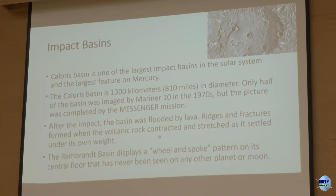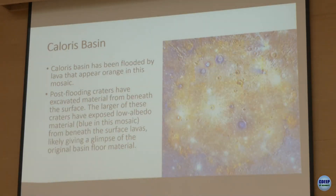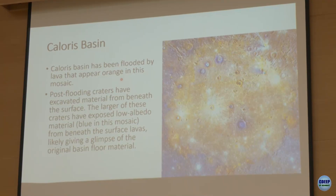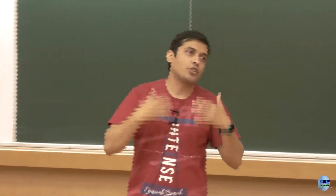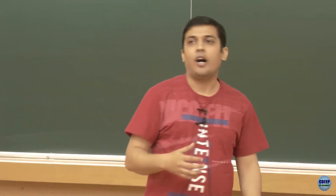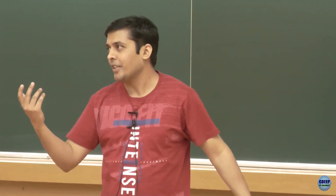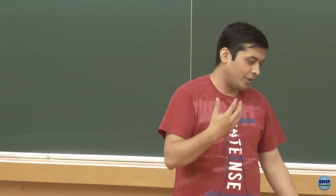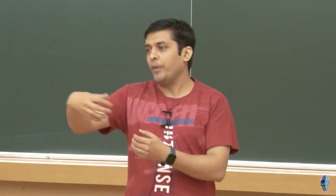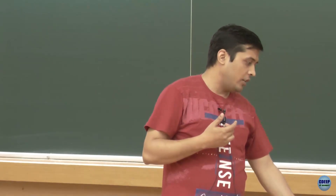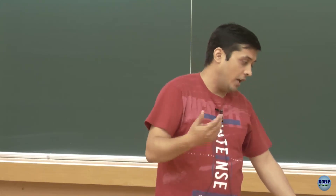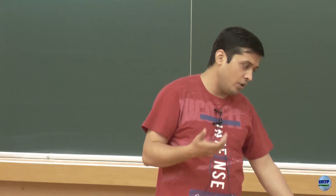After the Caloris Basin impact, lava flooded the basin — shown as orange in the false-color mosaic. Subsequent impacts excavated deeper, darker material with lower albedo, shown in blue in the image. Orange and white indicate high albedo material from the initial lava flooding; blue indicates low-albedo excavated material from beneath the lava surface.